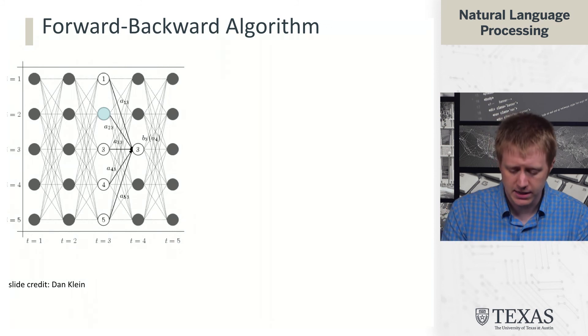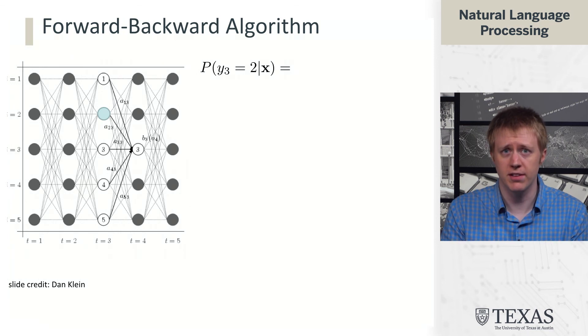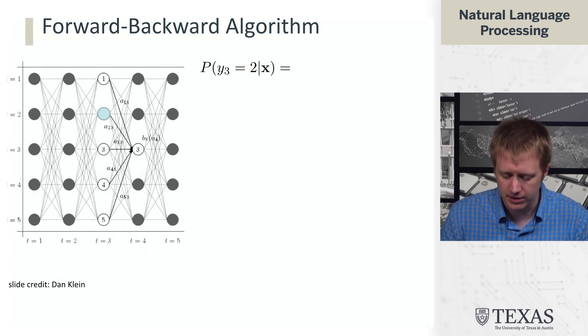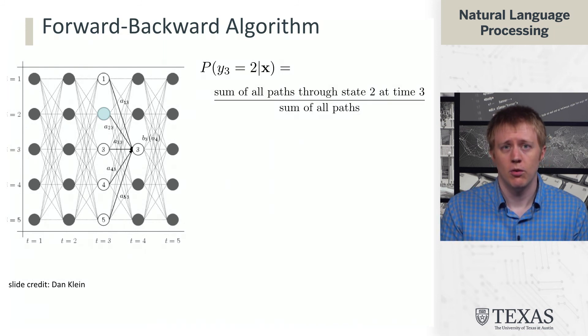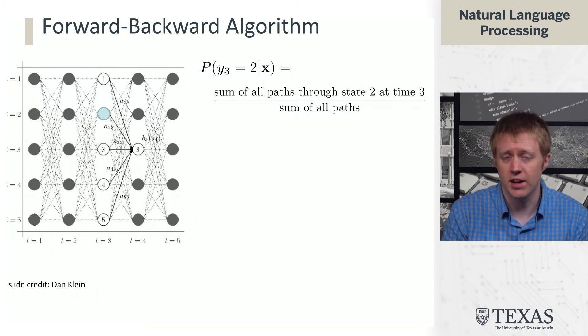So the basic idea is the following. We have this node here in the middle at time step 3. So what we can ask is, what is the probability that Y3, the tag at step 3, equals 2? So our tags in this case are integers, and we want to know what that probability is. The way to think about this is the sum of all paths through state 2 at time 3, or rather the kind of probability mass associated with all those paths, divided by the sum over all those paths.